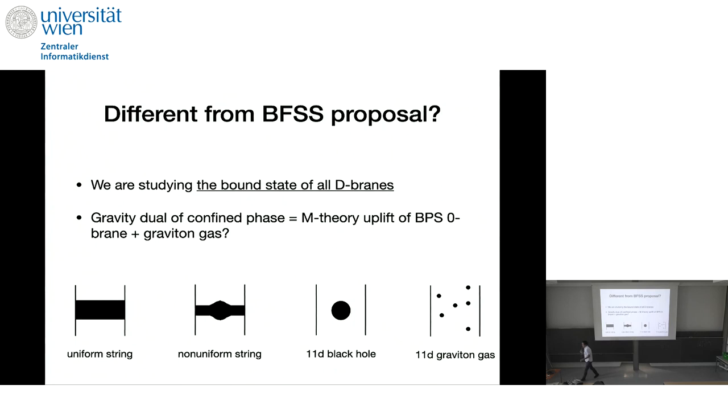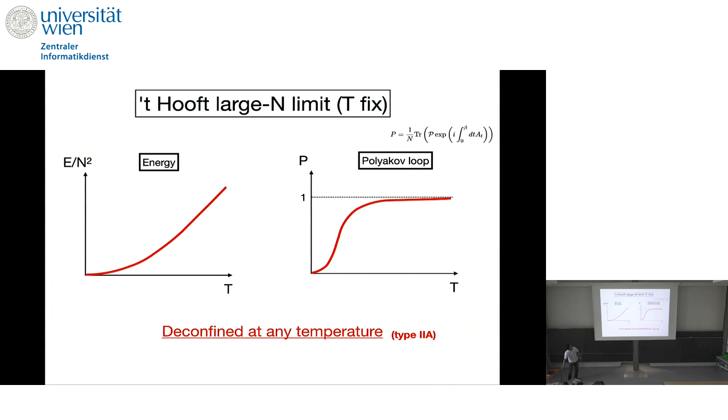However, we can make a consistent picture like this. So first, in the infinite N limit, people believe that only the deconfined phase exists, and it's dual to type 2A black zero-brane. But our proposal is that at any non-zero temperature, confined phase should exist as well. But if you compare free energy, this the deconfined phase always has smaller free energy. this is global minimum, this is only local minimum.